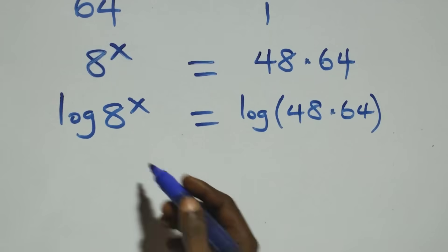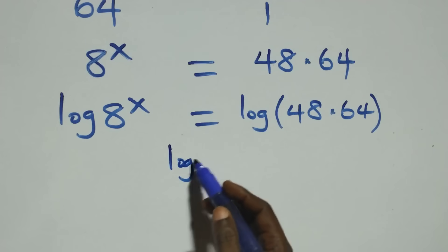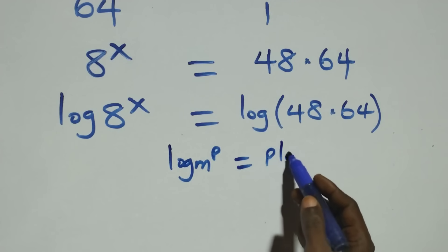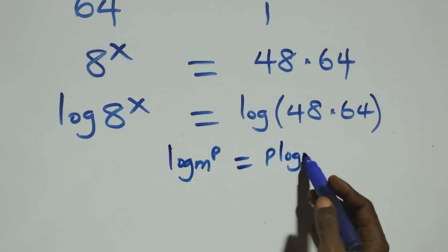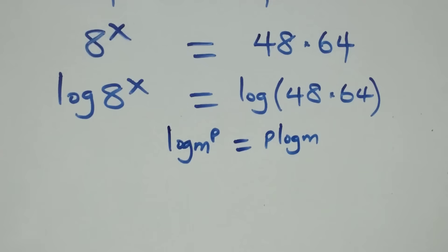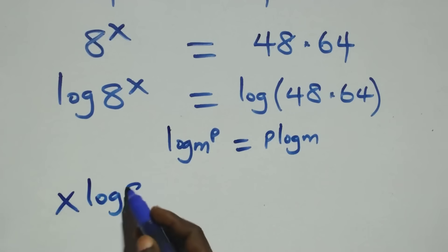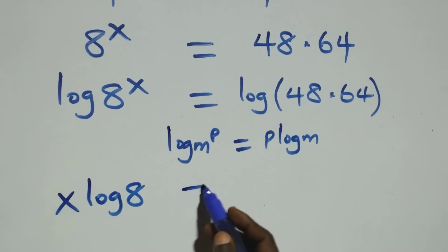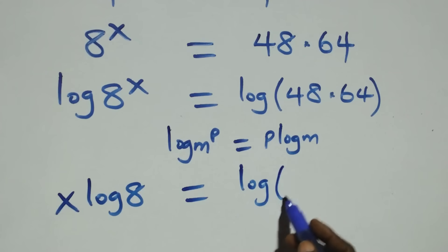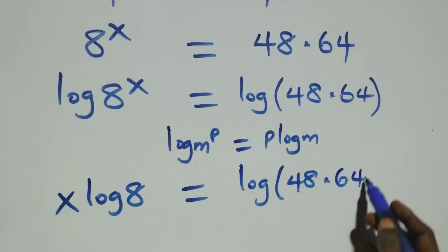From here, we apply the power rule of logarithms. When we have log m raised to power p, this is the same thing as p log m. That is, all we have becomes x log 8 equals log of 48 times 64.